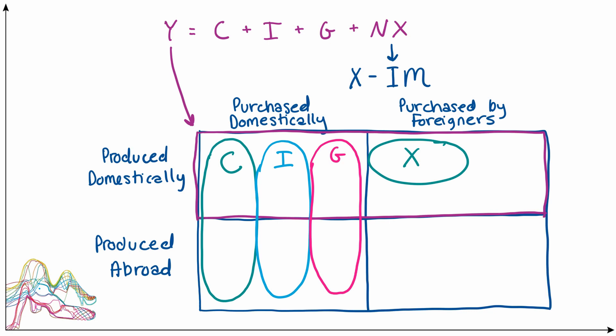Luckily, that's exactly where imports come into play because imports, by definition, are things that are produced in other economies or produced abroad, but purchased domestically. And so we can think about imports as all being in this box here. And so when we subtract imports out of our aggregate expenditure equation, what we're really doing is applying a correction factor to make sure that we're only counting expenditure on things that are produced domestically.